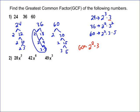And so when we do 2 squared times 3, that's going to give you 2 squared is 4 times 3 is 12. So the greatest common factor of this problem is 12.